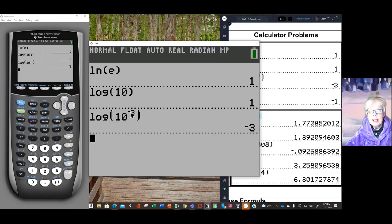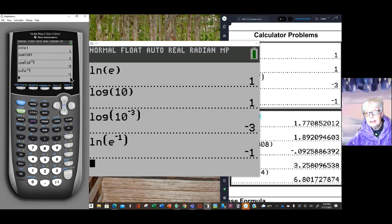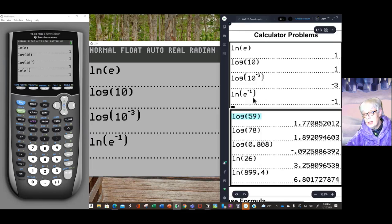Negative 3. Right there. So the log of 10 to the negative 3 is negative 3. Now we're going to do the same thing with the ln of E raised to the negative 1 power. And now, don't close your parenthesis yet. Hit the right arrow key to bring your cursor down. Now click the right parenthesis key and hit enter. And the answer is negative 1.